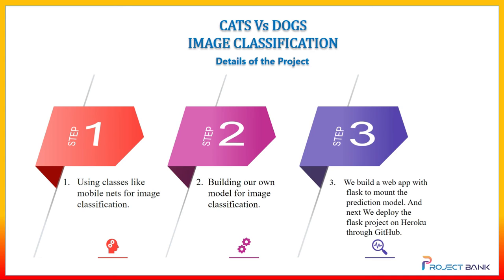Now let's understand the details of the project. First, we will be using pre-trained models like MobileNets for image classification — you can retrain them or use them directly. Second, we will understand how to build our own image classification model. Third, we will use Flask to deploy that model as a web application. Lastly, we will deploy the Flask project on Heroku.